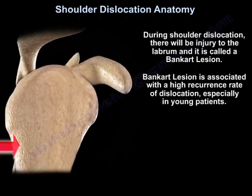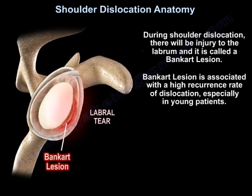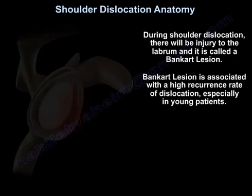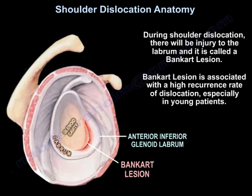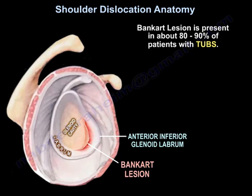During shoulder dislocation, there will be injury to the labrum and it is called a Bankart lesion. Bankart lesion is associated with a high recurrence rate of dislocation, especially in young patients. Bankart lesion is present in about 80 to 90% of patients with TAPS.